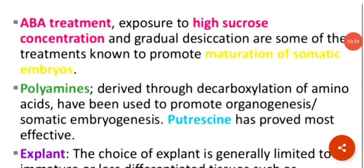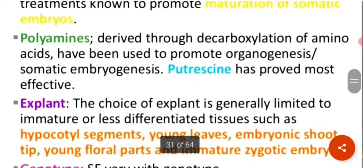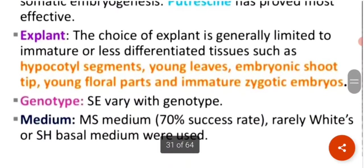Abscisic acid treatment, exposure to high sucrose concentration, and gradual desiccation are some treatments known to promote the maturation of somatic embryos. Polyamines derived through the decarboxylation of amino acids have been used to promote organogenesis or somatic embryogenesis. Choice of explant is generally limited to immature or less differentiated tissues such as hypocotyl segments, young leaves, embryogenic shoot apex, young floral parts, and immature zygotic embryos.